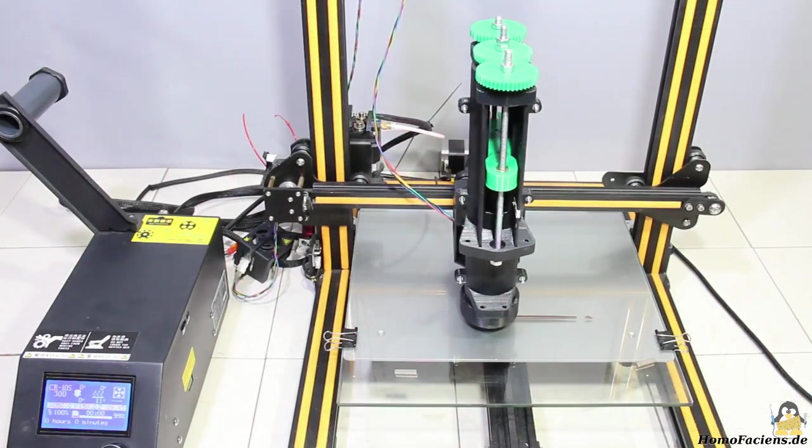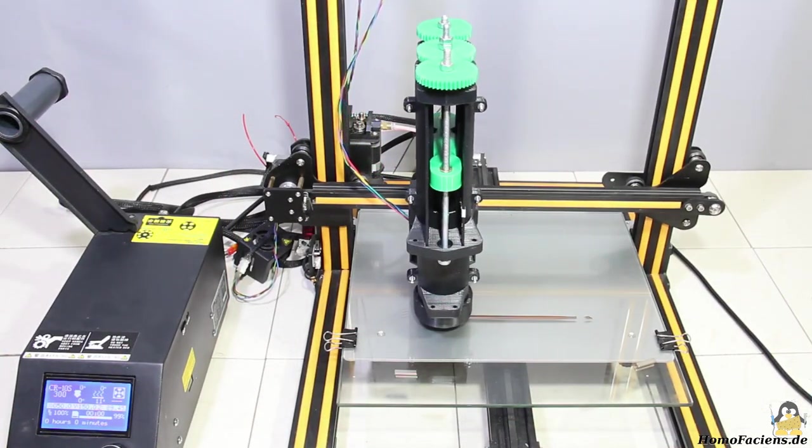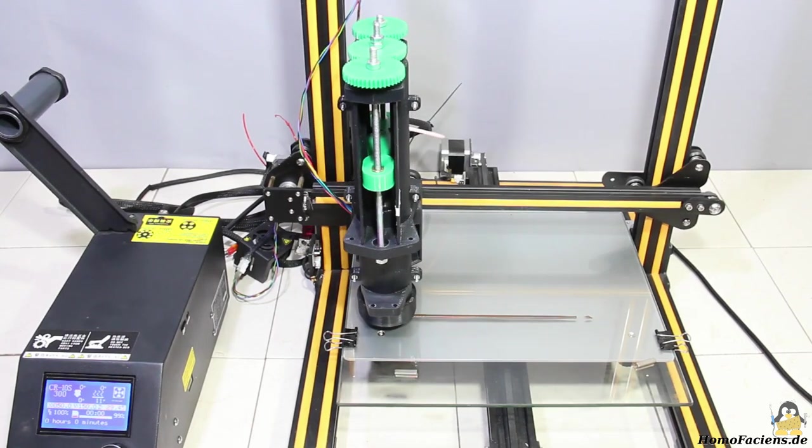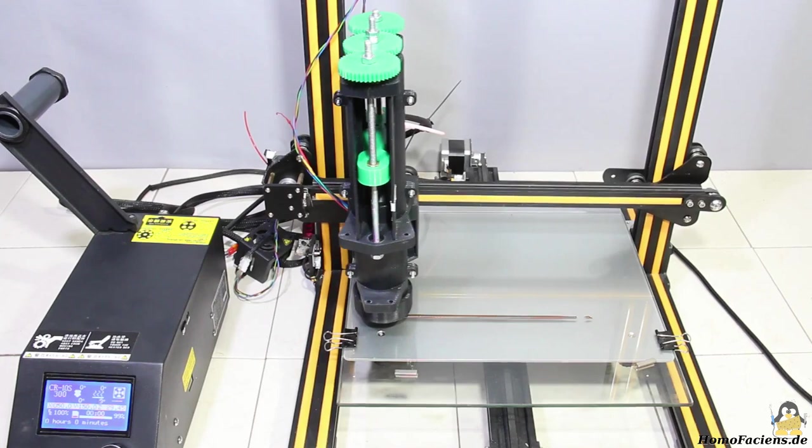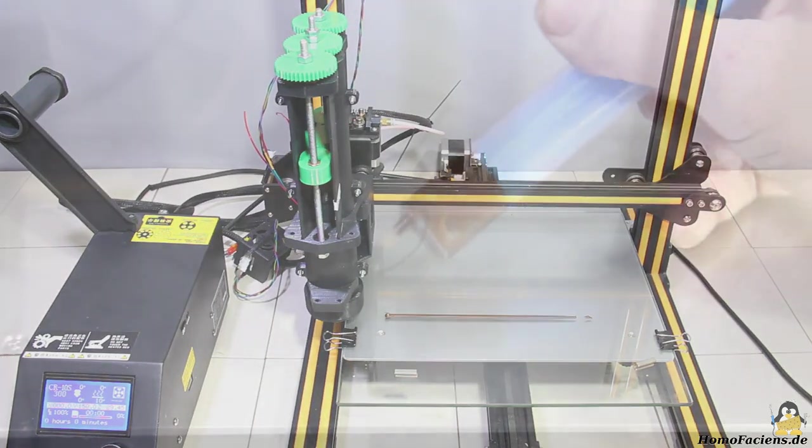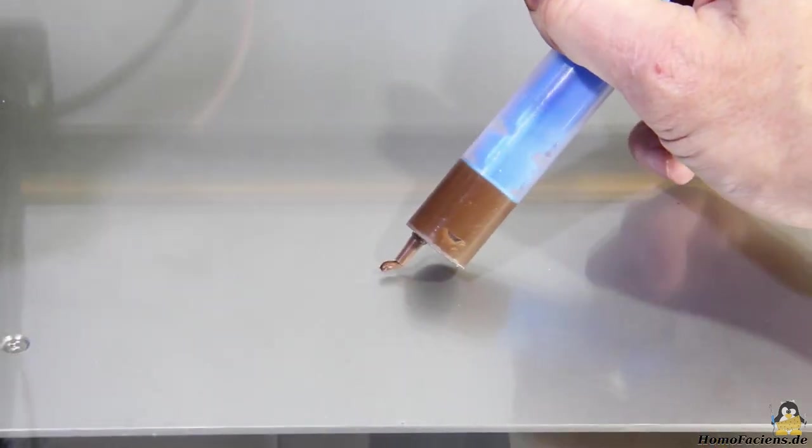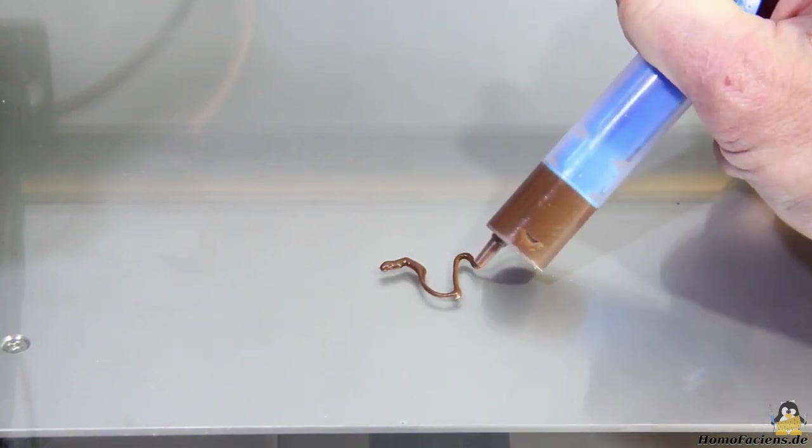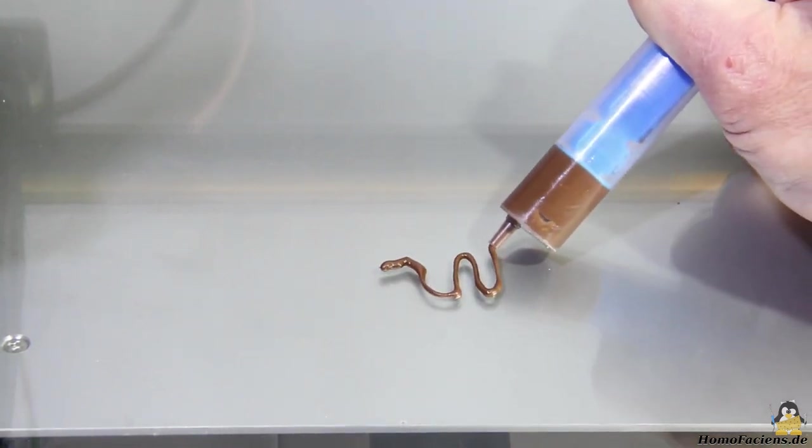A printer for pasty materials. A source of inspiration was the Universal Paste Extruder, an open source project from Rigid Horn. Like this one, my design also uses syringes to squeeze out materials in a controlled way.